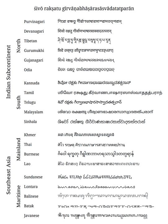Vowels are presented in their independent form on the left of each column, and in their corresponding dependent form combined with the consonant K on the right. A glyph for ka is an independent consonant letter itself without any vowel sign, where the vowel a is inherent.